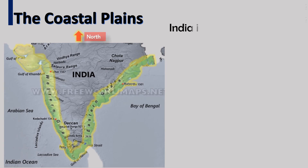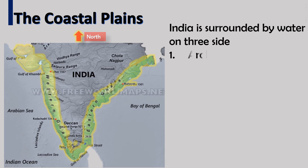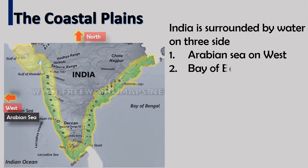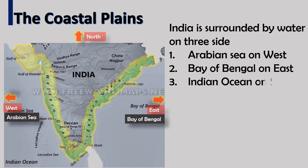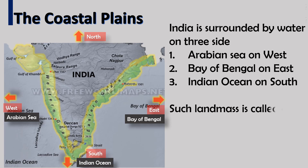In this video we will learn about the coastal plains and the islands of India. India is surrounded by water on three sides: on the west is the Arabian Sea, on the east is the Bay of Bengal, and on the south is the Indian Ocean. A landmass which is surrounded by water from three sides is called a peninsula.